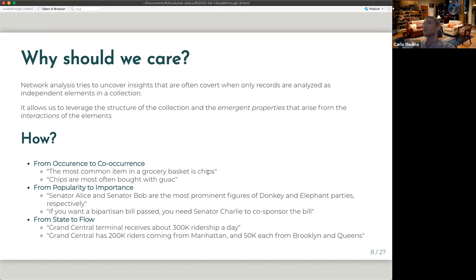And then we move from popularity to importance. For example, we can say that Senator Alice and Senator Bob are the most prominent figures of donkey and elephant parties, respectively. But it doesn't give us detail to which senator should we convince, let's say we want to pass a bipartisan bill. It could be the case that Senator Charlie, whenever he co-sponsors the bill, that bill would pass more than Senator Alice or Bob. So it's not so much about popularity, but importance.